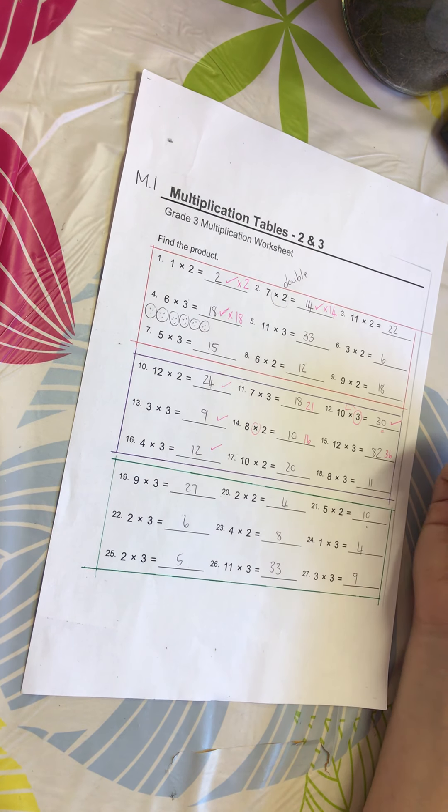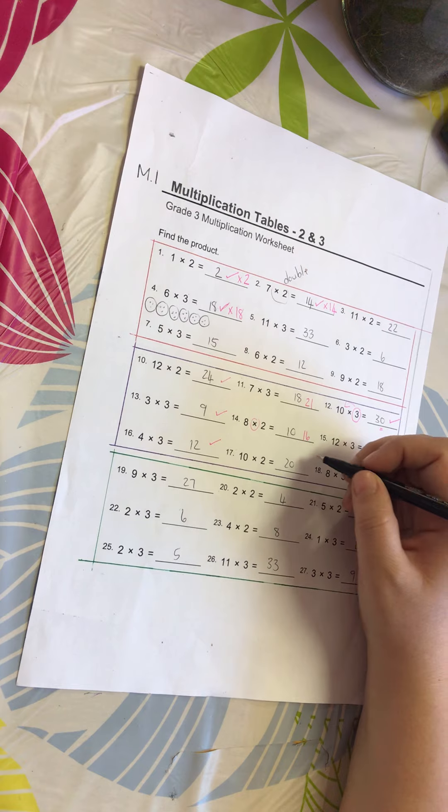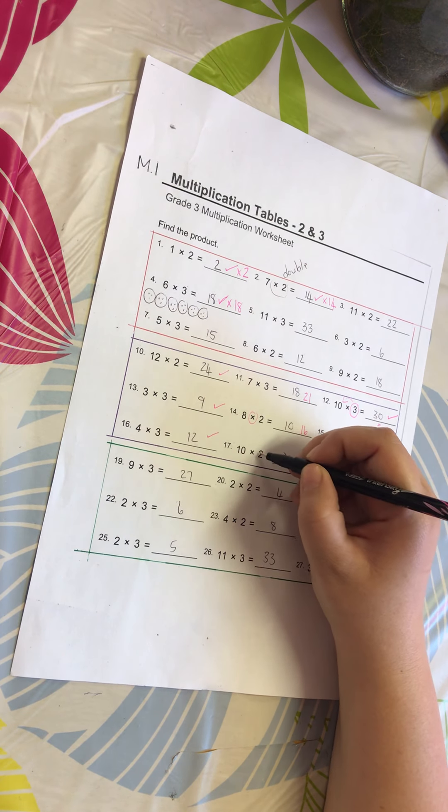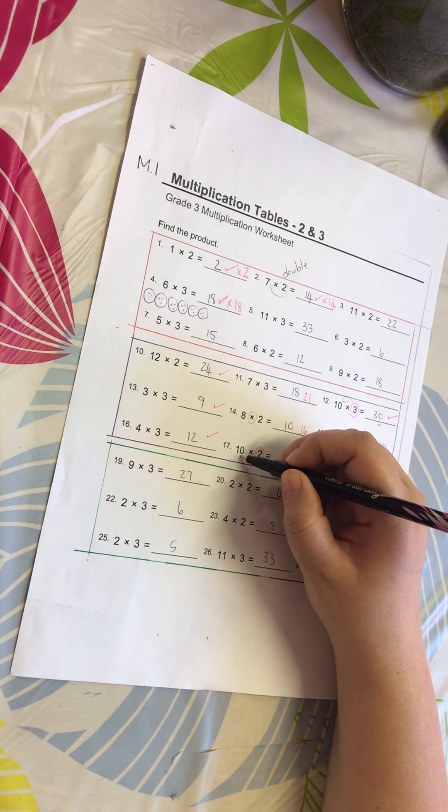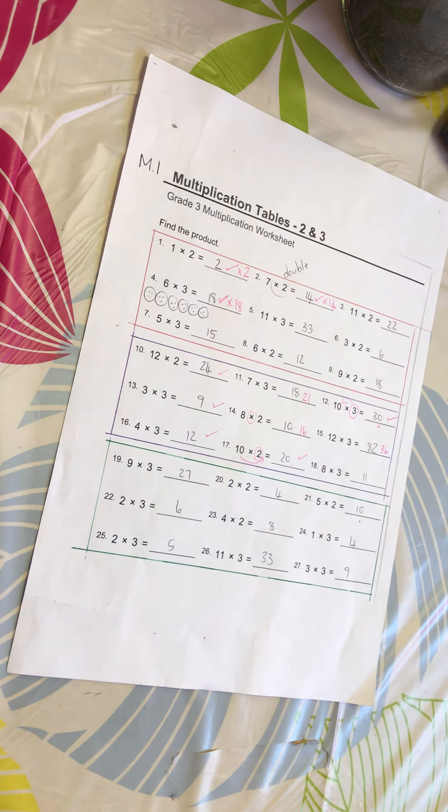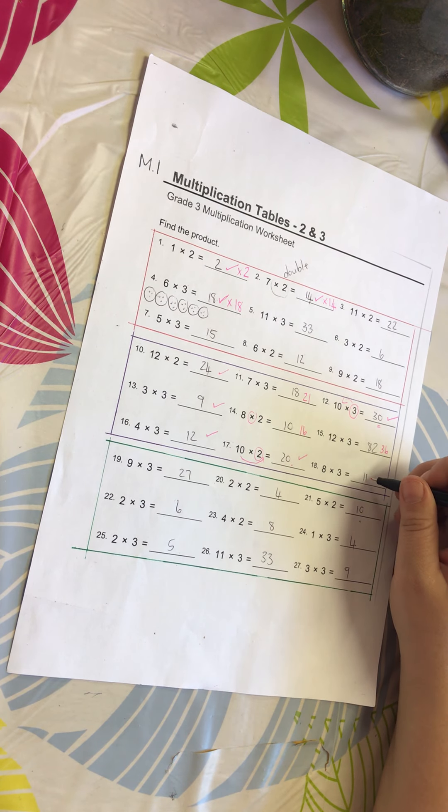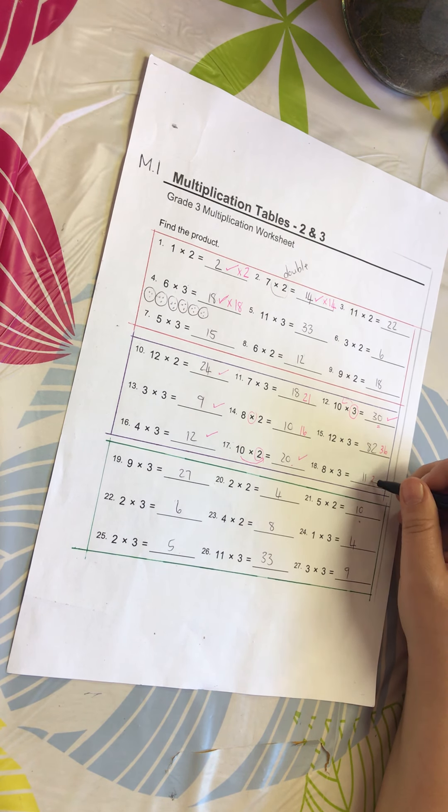Number 17: 10 times 2 is 20. Again, what was timesed with 10? The 2. So we just add an extra 0 and we get to 20. Number 18: 8 times 3, not 11, 8 times 3 is 24.